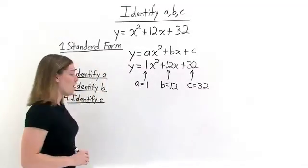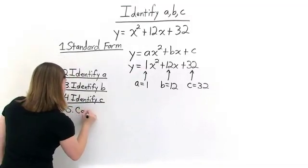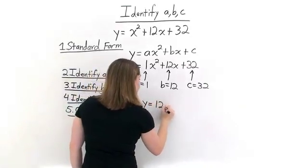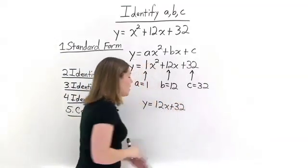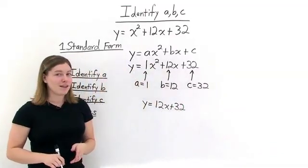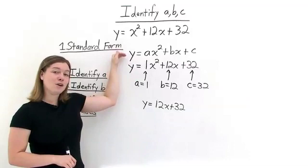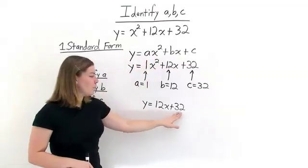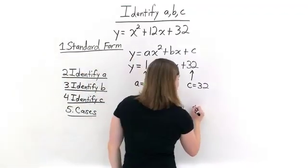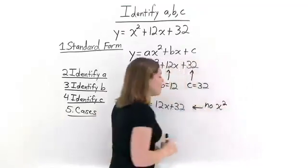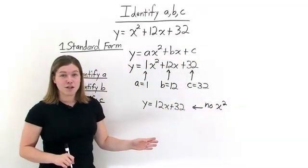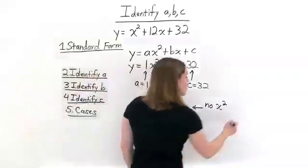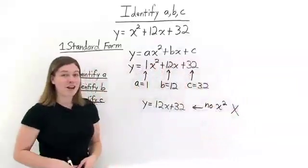Now that we found a, b, and c in this quadratic equation, let's look at a few special cases. Let's say you're given y equals 12x plus 32 and you're asked to find a, b, and c. If we try to put this equation in standard form for a quadratic equation, we notice that we don't have an x squared term. Since there's no x squared term, this equation is not a quadratic equation, which means we cannot find a, b, and c.